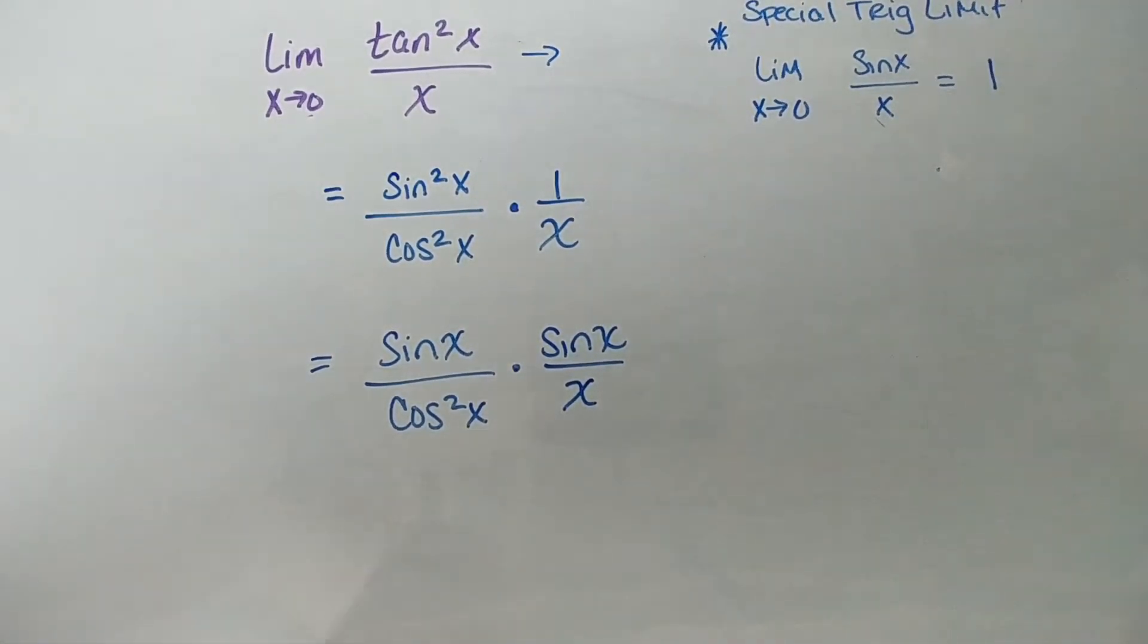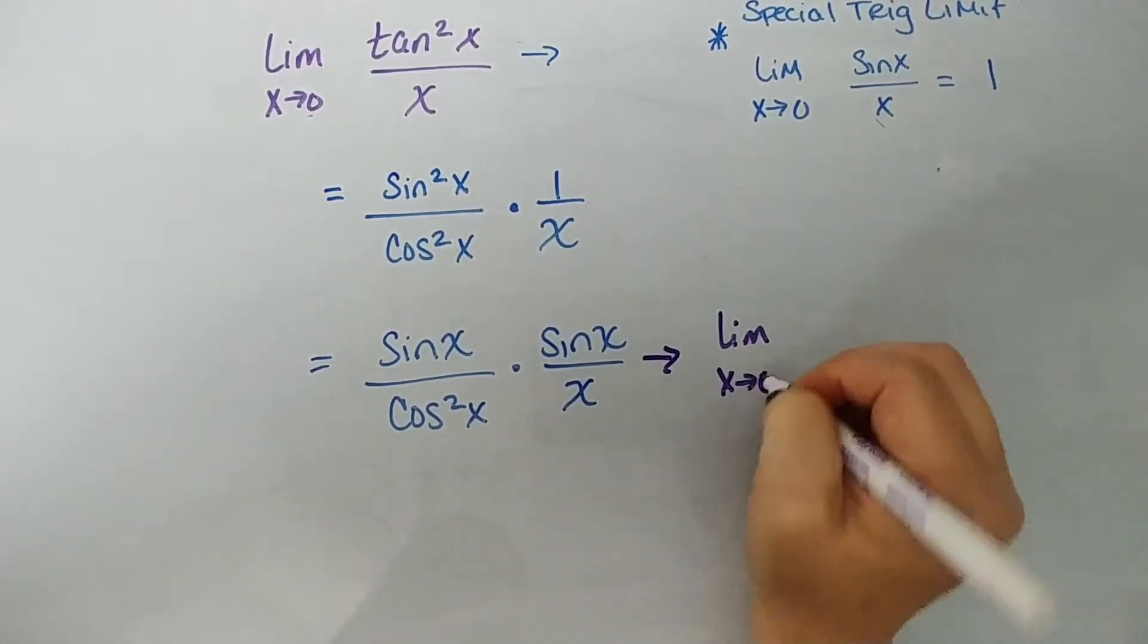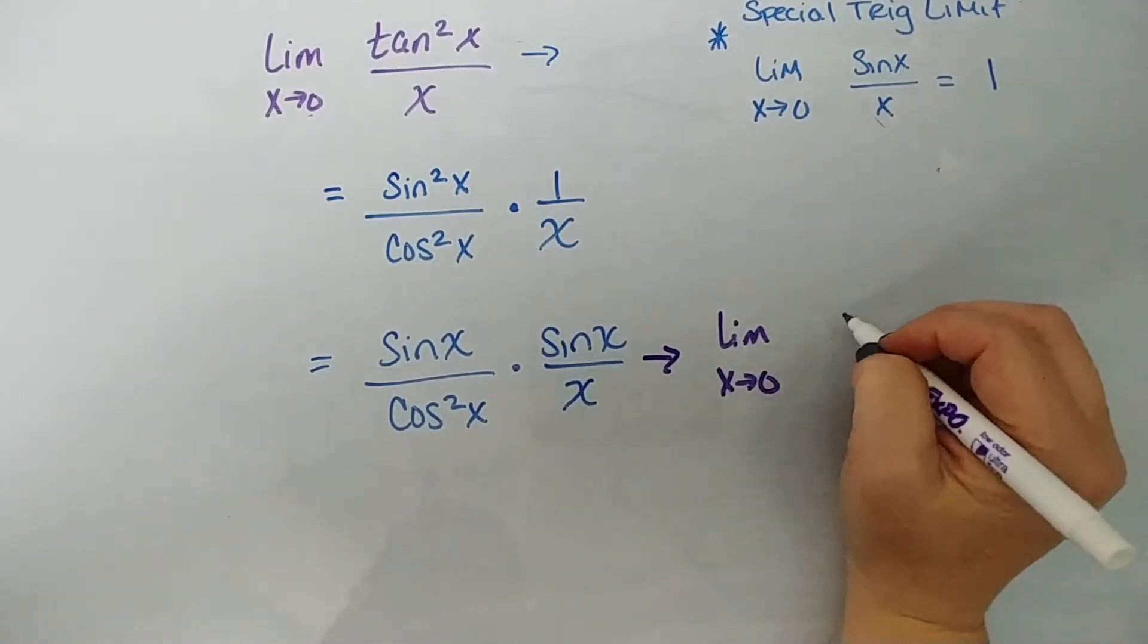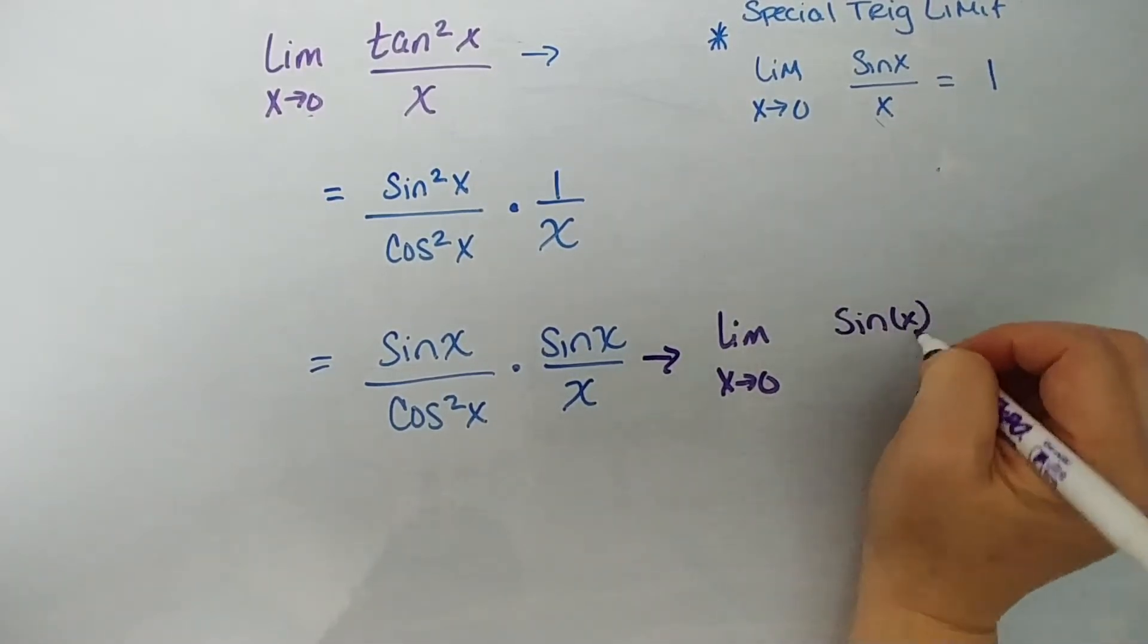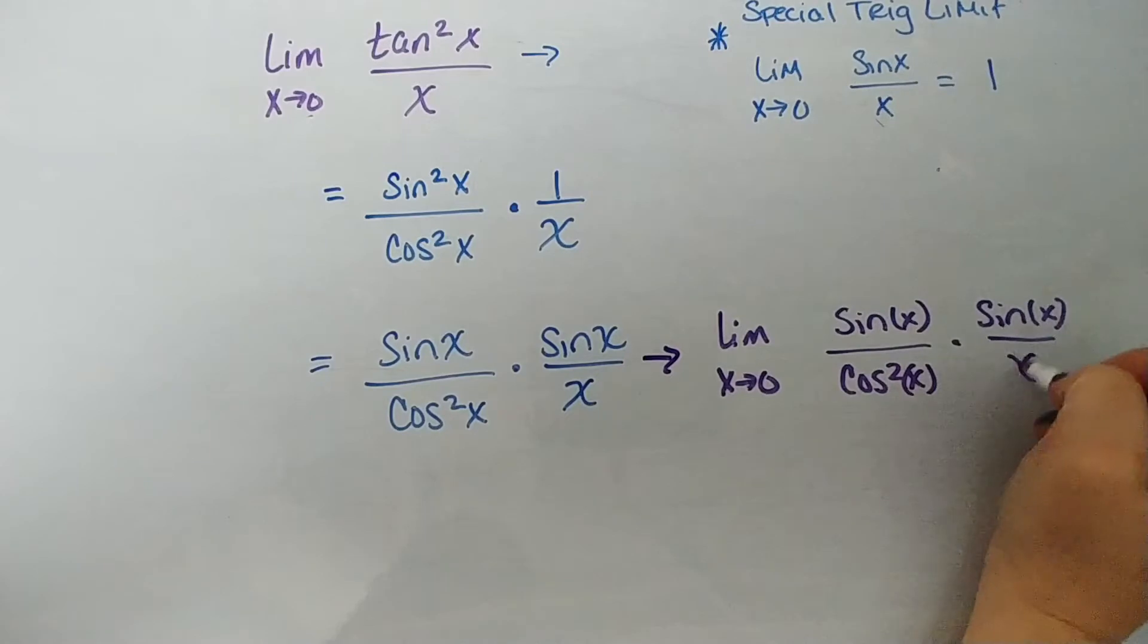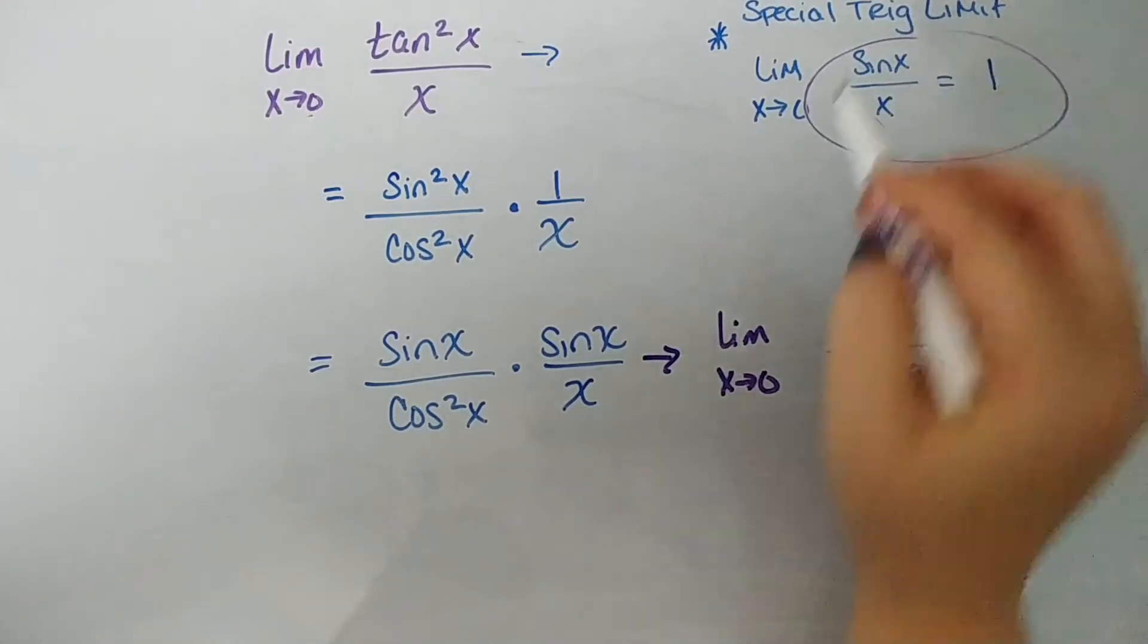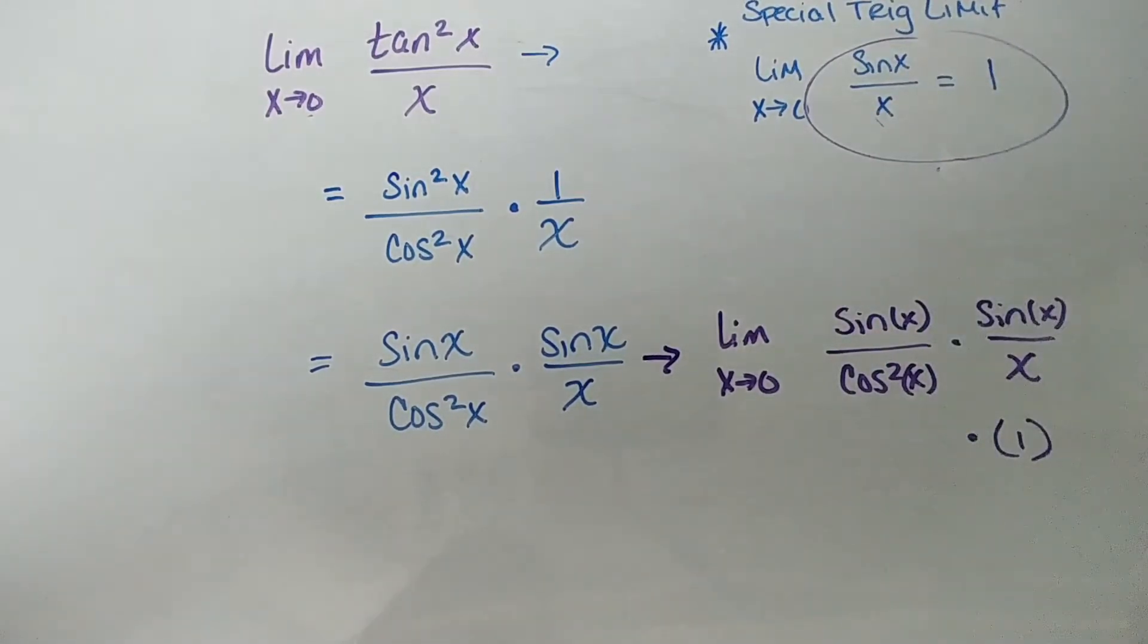So we'll get rid of all this. So now we do have a limit that we can take. So if I just say, okay, now I want to take the limit as x approaches 0 of sine of x all over cosine squared of x times sine of x all over x. I know that this is 1 based on that rule, okay? See this rule? That is what that is, okay? As x approaches 0 sine of x over x.